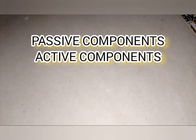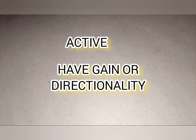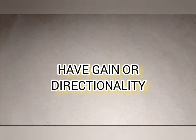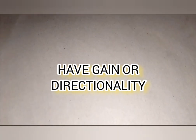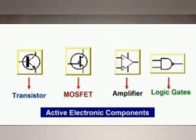Electronic components are divided into two: passive components and active components. Active components are those that have gain or directionality, while passive components are those that do not have gain or directionality. As you see in those two pictures I have put there, you can see how active and passive components differ.